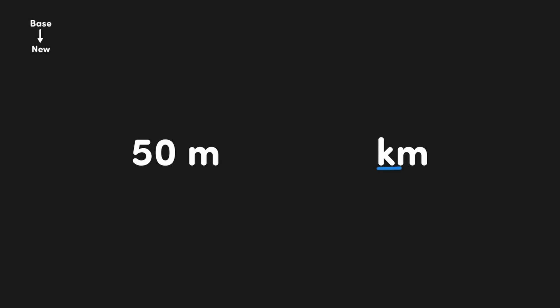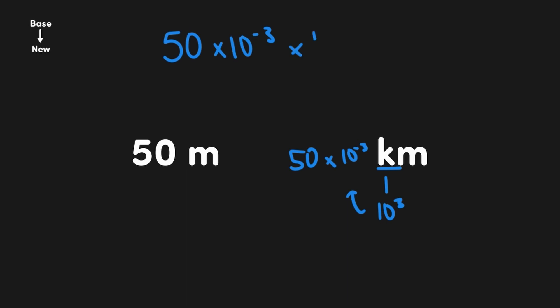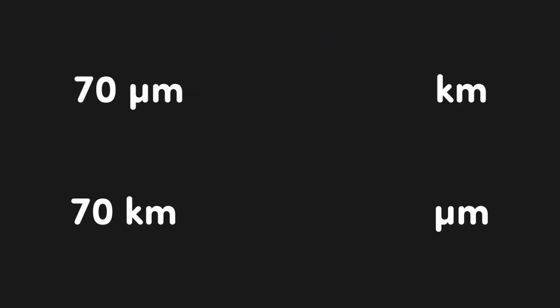Here we want to convert 50 meters into kilometers. We add in kilo, whose scientific notation value is 10 to the 3, then multiply by the inverse, which is 10 to the negative 3. So 50 meters becomes 50 times 10 to the negative 3 kilometers. Why does this work? If we reconvert kilo back into scientific notation, we have 50 times 10 to the negative 3 times 10 to the 3 meters — those cancel, leaving 50 meters again. So we've really multiplied by 1 in a way that adds in an SI prefix. Now let's look at two more examples from the beginning: converting 70 micrometers into kilometers.